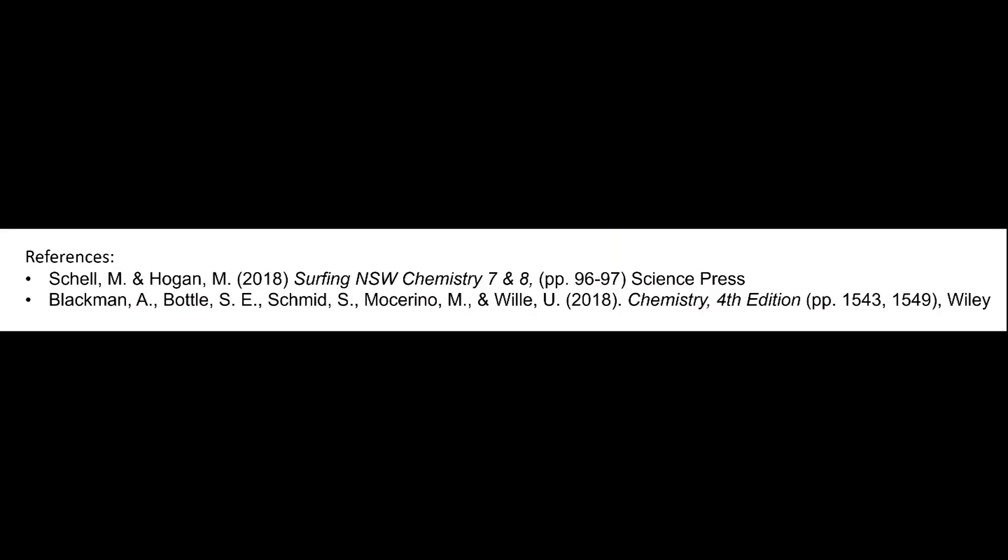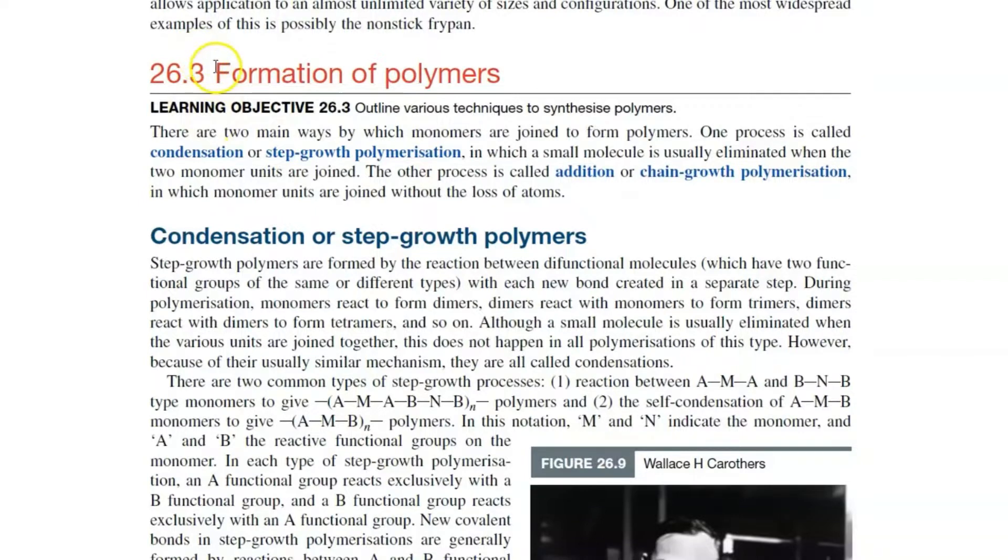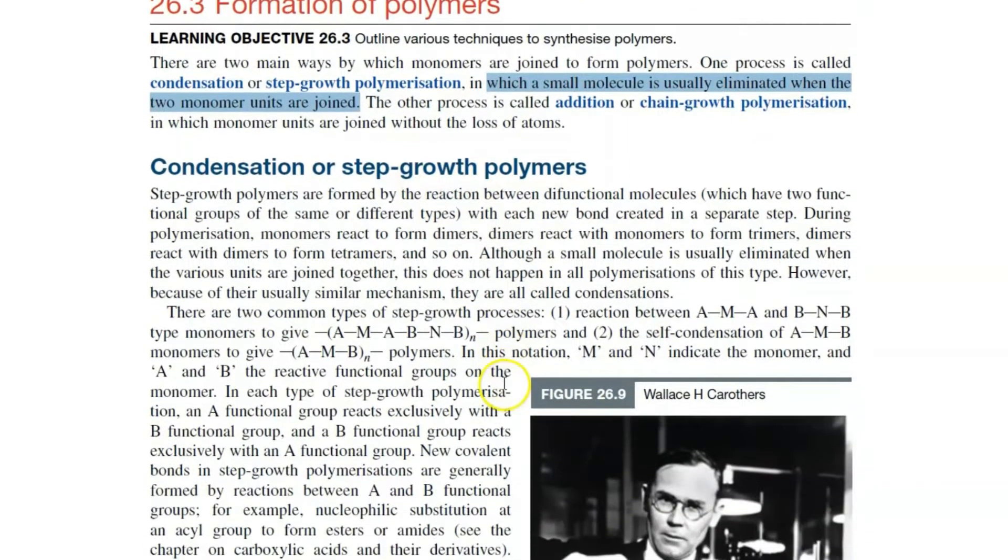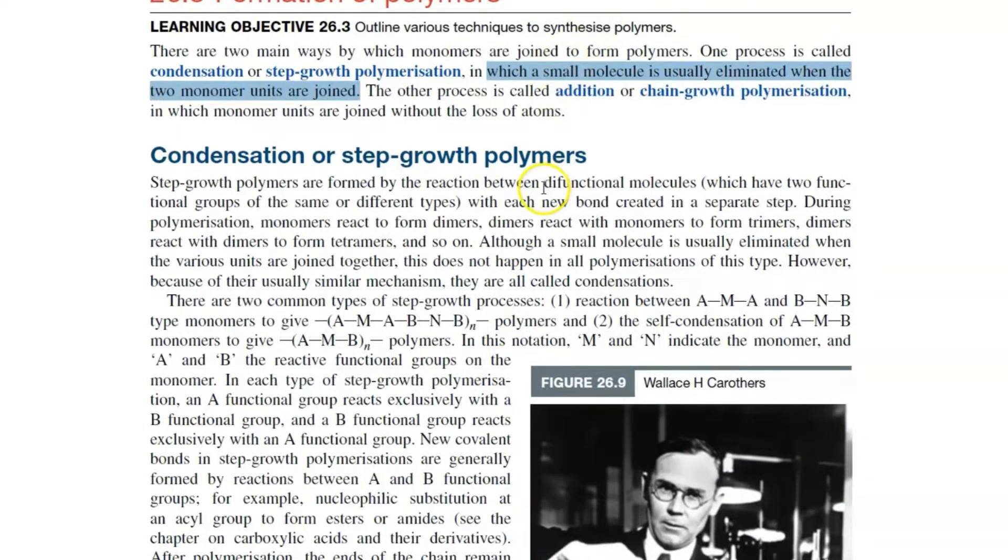For this video, the following references were used. Blackman et al. have a section on the formation of polymers, stating the two main ways they are produced, including condensation or step growth polymerization, where a small molecule is usually eliminated when monomers join. The section on condensation reactions even specifies that the molecule needs to be difunctional, or have two functional groups.